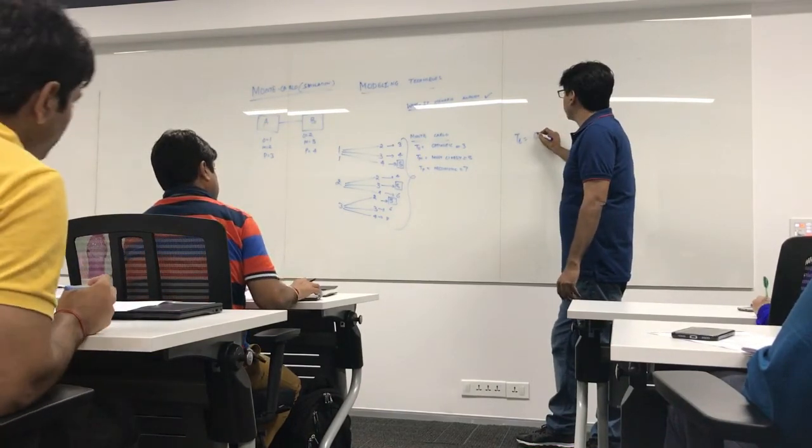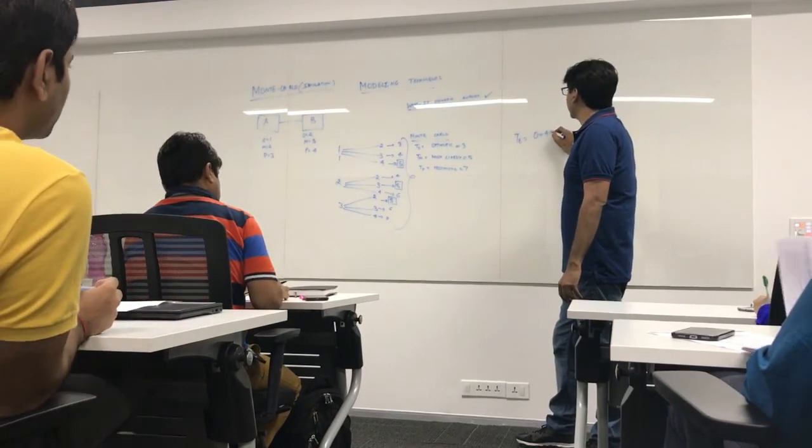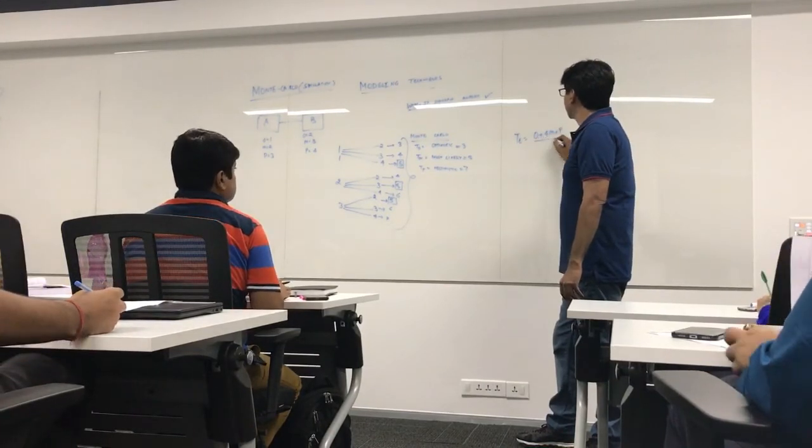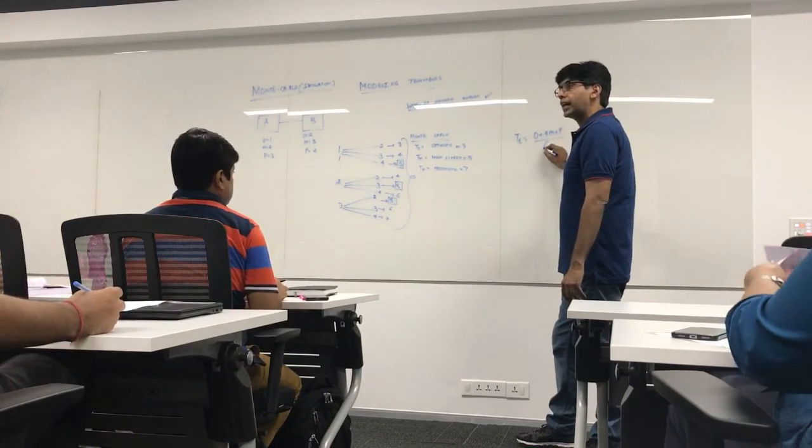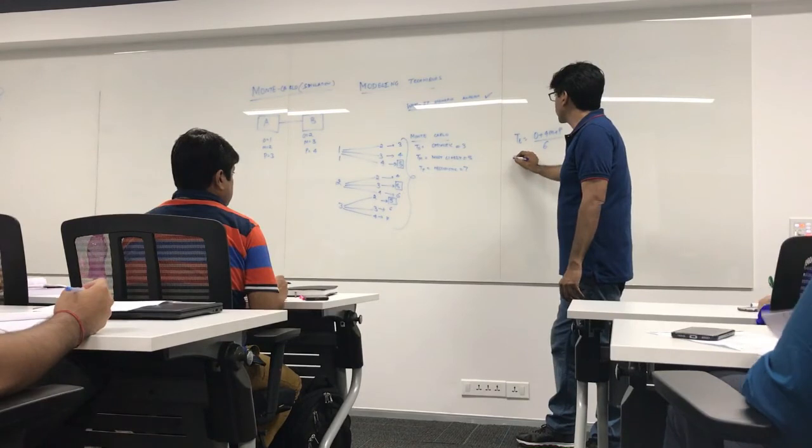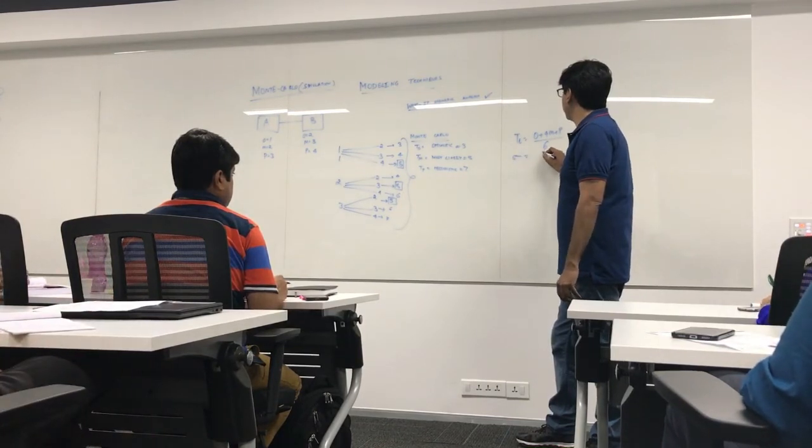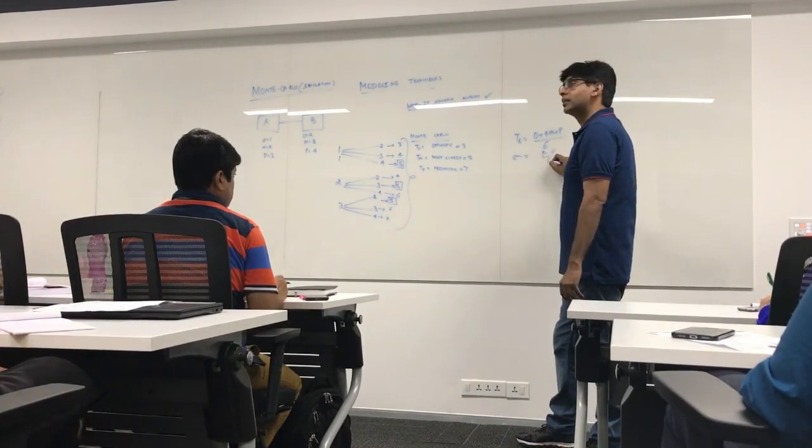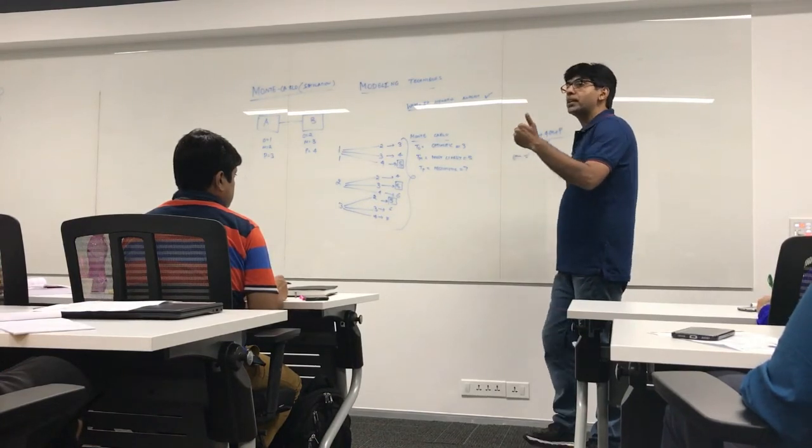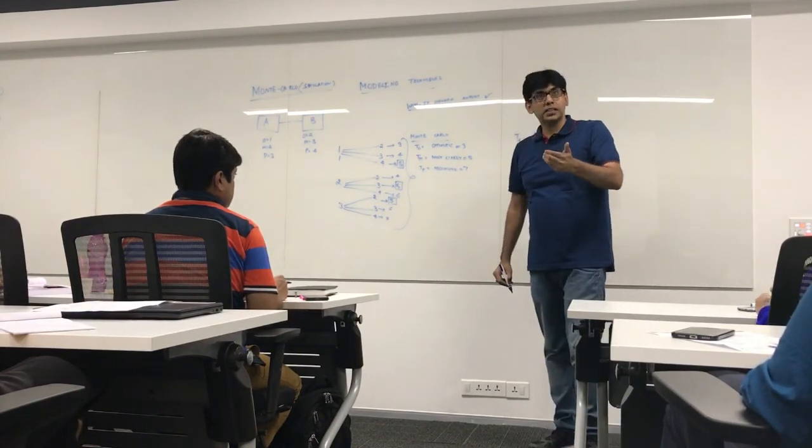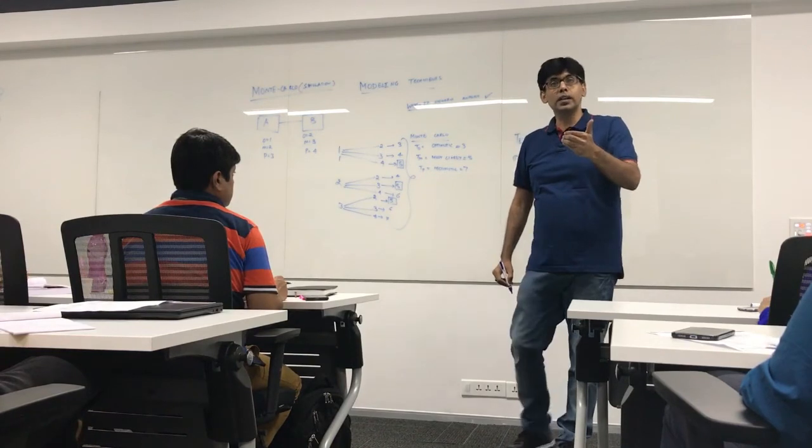By using the formula optimistic plus 4 times most likely plus pessimistic by 6. I can also find out the standard deviation by using the formula P minus O by 6. Then I can relate the expected time with the probability of success. So this is in brief about Monte Carlo.